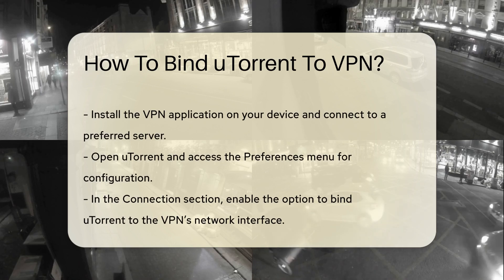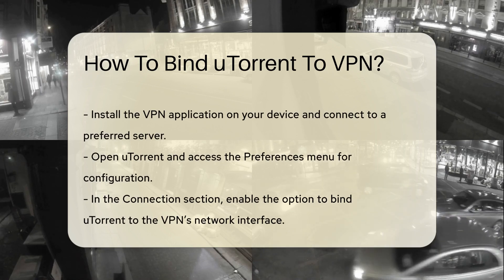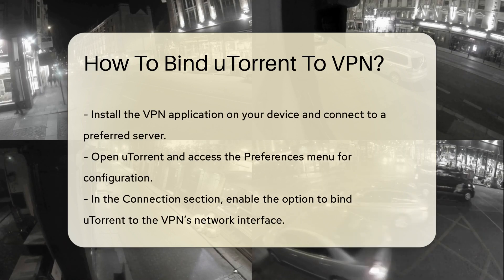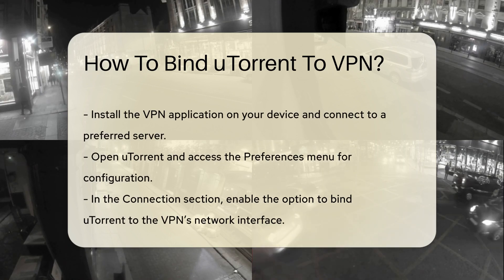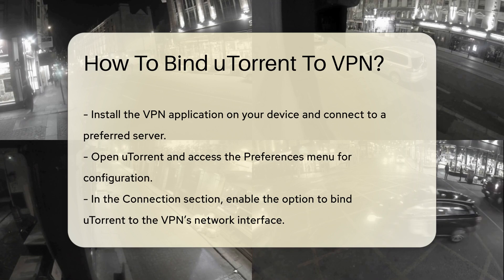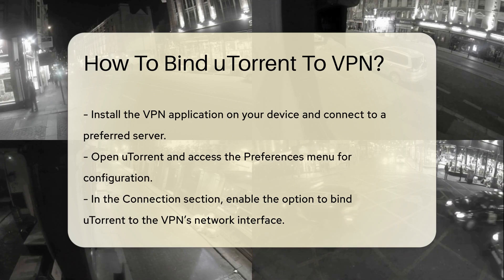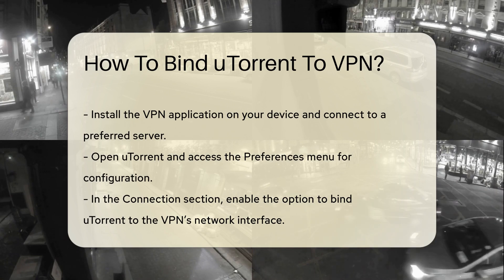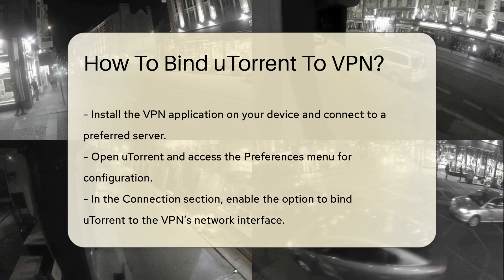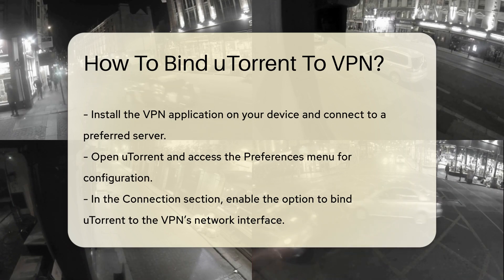Once you have chosen a VPN, install its application on your device and connect to a server of your choice. Next, open uTorrent and navigate to the Preferences menu.